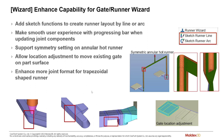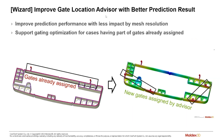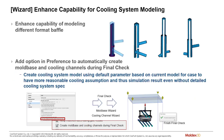We've improved the gate location advisor to give a better prediction of where gates should be located to optimize the flow length ratio. It also allows you to include more gates in addition to the gates already on your model — for example, if you already have two gates, you can use the gate location advisor to place additional gates. Cooling system capability has been improved as well, with more diverse modeling of baffles and bubblers.